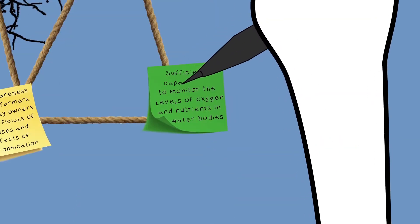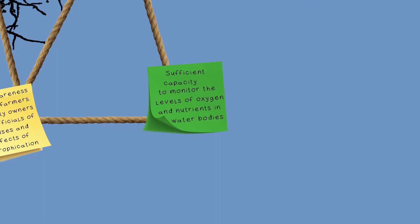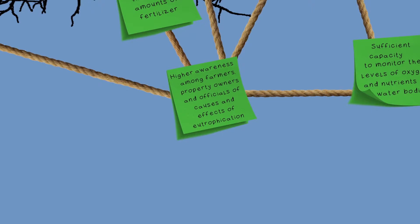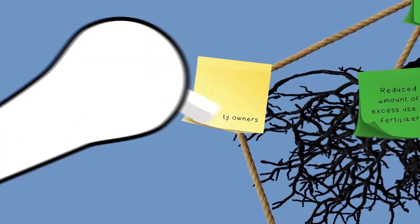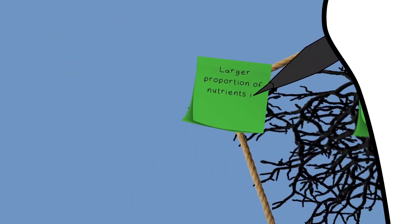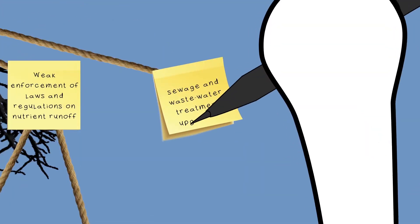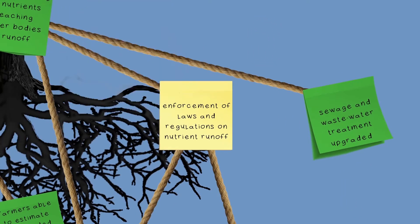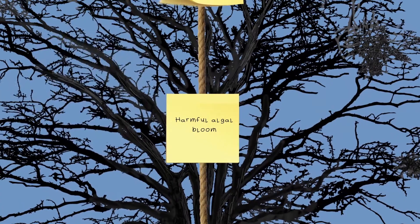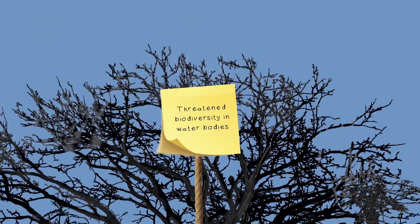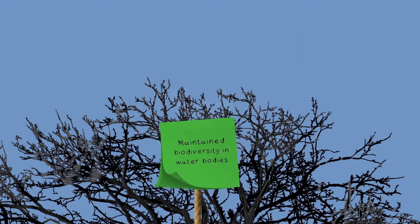Sufficient capacity to monitor oxygen and nutrient levels in water bodies. Higher awareness among farmers, property owners and officials of causes and effects of eutrophication. Larger proportion of nutrients in runoff intercepted. Sewage and wastewater treatment upgraded. Stricter enforcement of laws and regulations on nutrient runoff. Sufficient levels of oxygen for healthy aquatic state. Maintained biodiversity in water bodies.